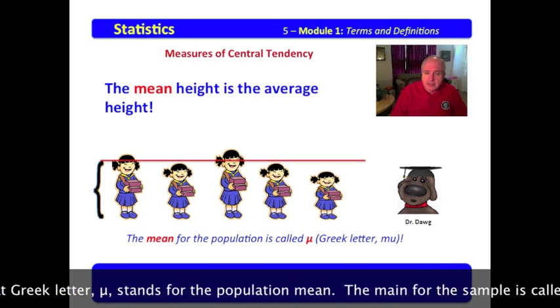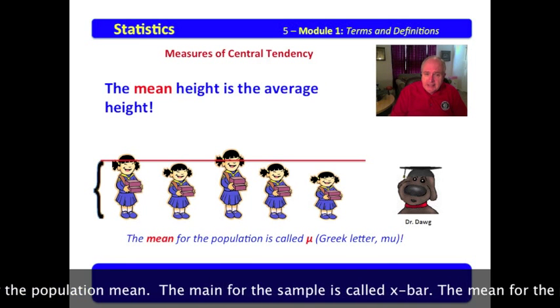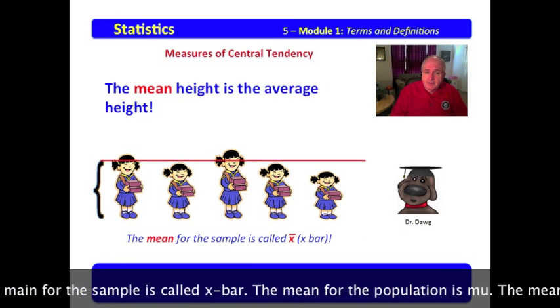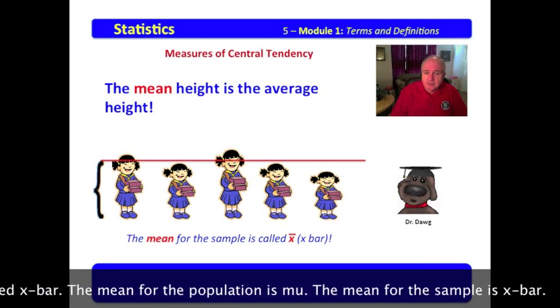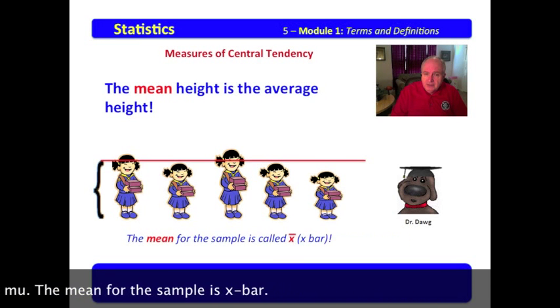And the mean for the sample is called x-bar. The mean for the population is mu, the mean for the sample is x-bar.